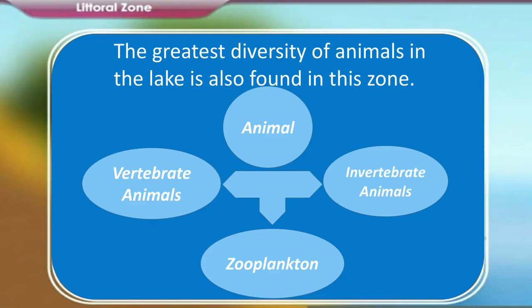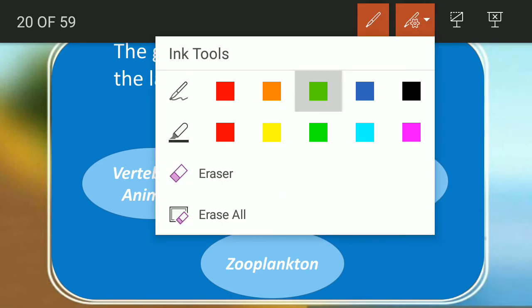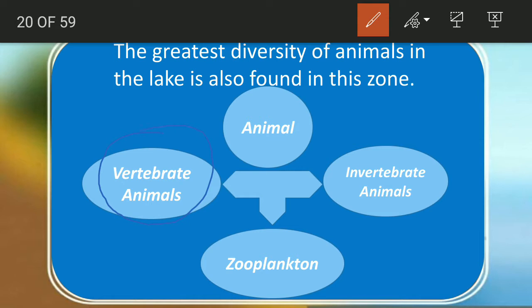The greatest diversity of animals in lakes is also found in this zone. These animals are categorized as vertebrate animals — animals with a backbone and notochord — invertebrate animals, which lack a backbone or notochord or spinal cord, and zooplankton. Zoo stands for animal and plankton stands for microscopic organisms, so zooplankton are the microscopic animals. In Greek, zooplankton refers to drifting animals — the floating microscopic animals.